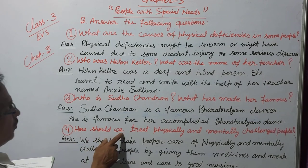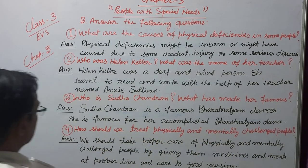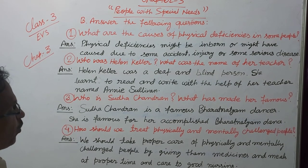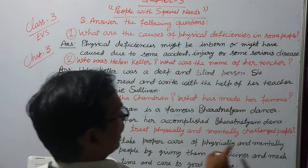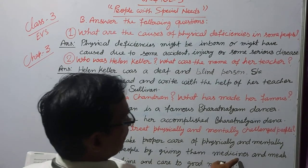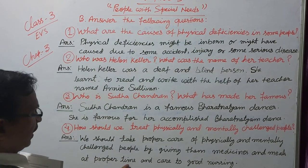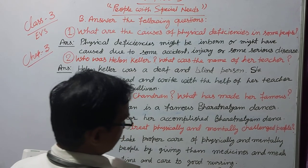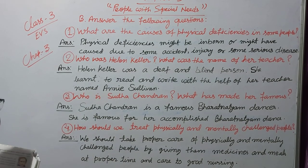Question number 4: How should we treat physically and mentally challenged pupils? Answer: We should take proper care of physically and mentally challenged pupils by giving them medicines and meals at proper time, and providing good nursing care. Learn and remember all these questions and answers.